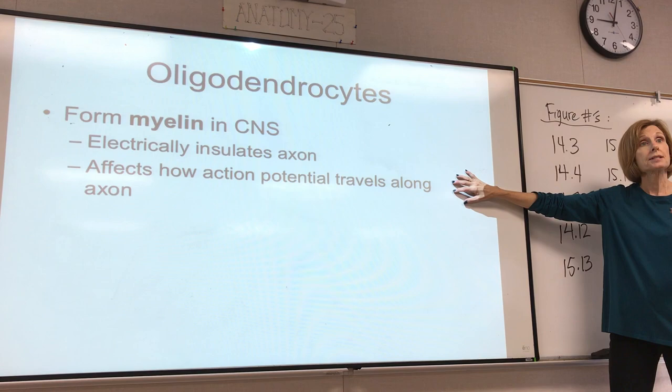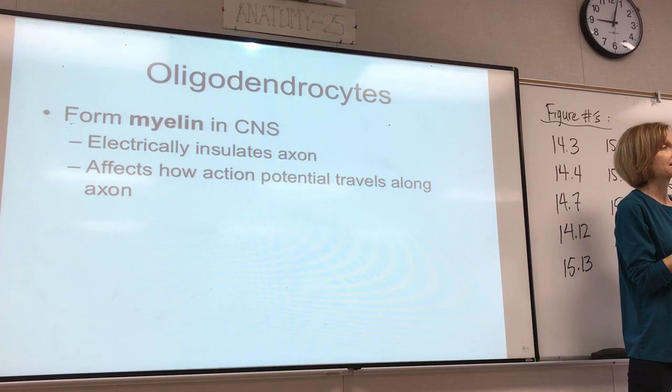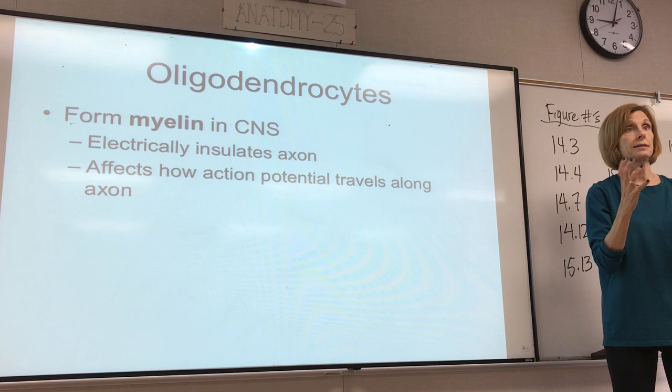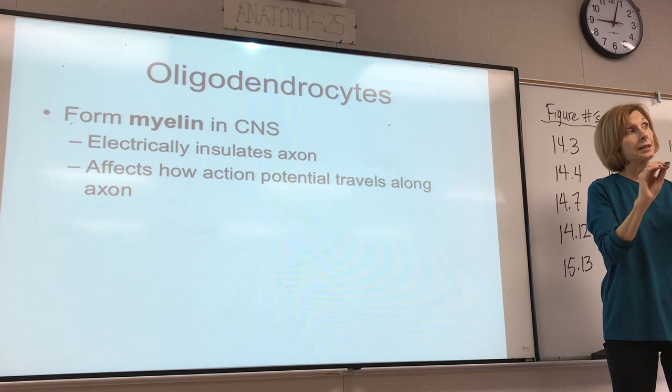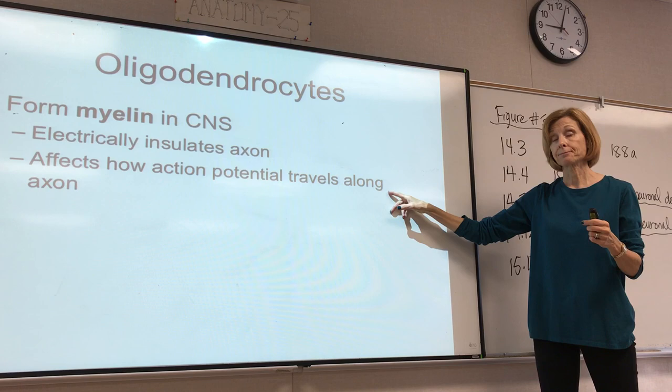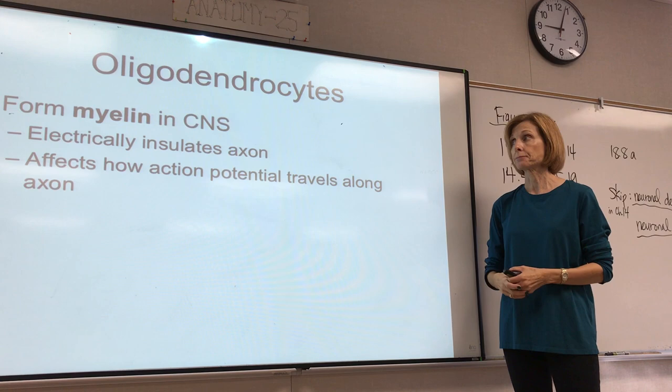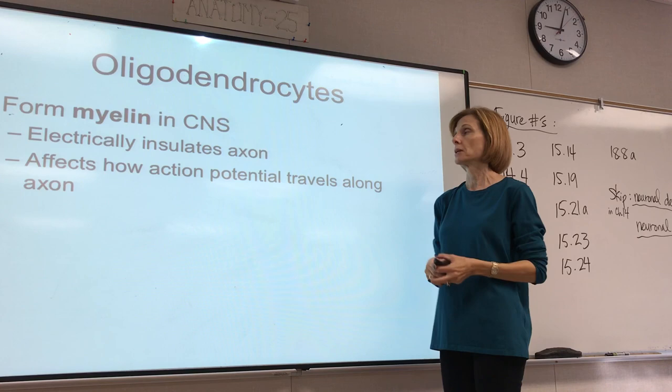The last type of neuroglial cell in the CNS is called an oligodendrocyte. Oligodendrocytes have the function of forming a substance called myelin in the CNS. Myelin is really important — it electrically insulates the axons from each other so that the action potential isn't automatically transmitted to all neurons at once. This is also what gives us white matter; what we call white matter is really myelinated axons that have this kind of coating around them.